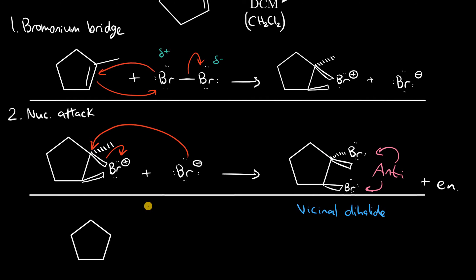And the enantiomer would be the result of the bridge forming on a dash instead of a wedge here. In other words, we just switch the chiral centers right here and right here.